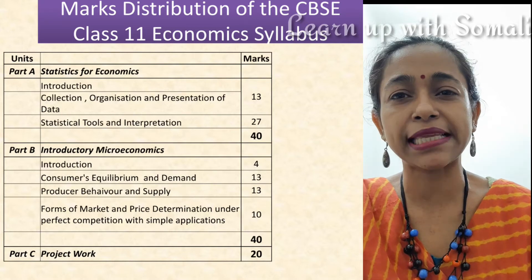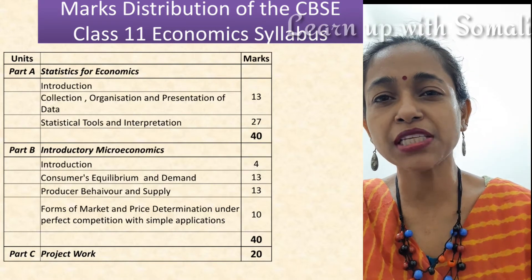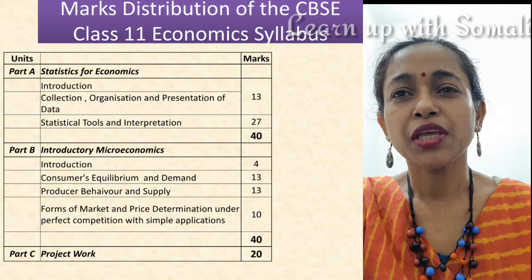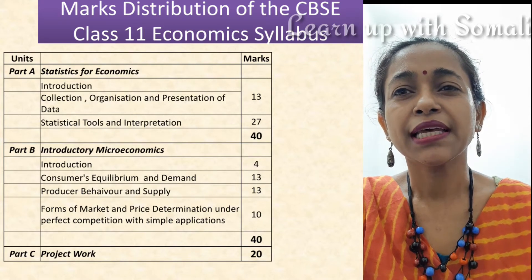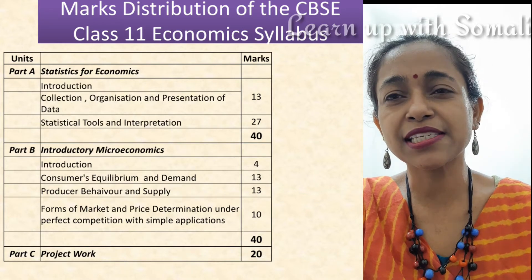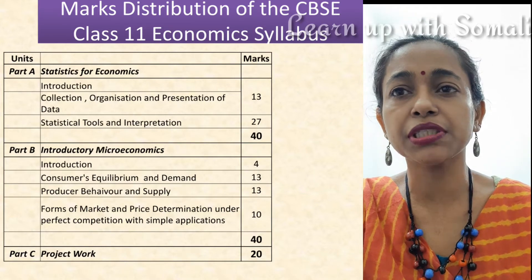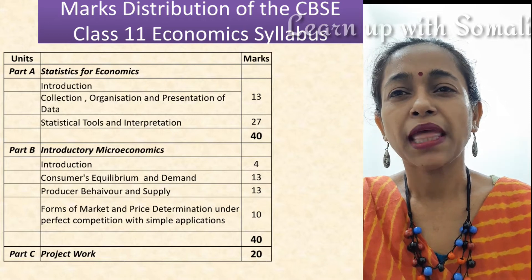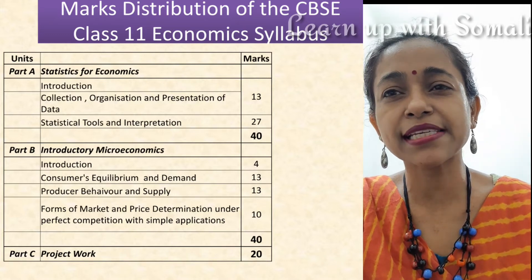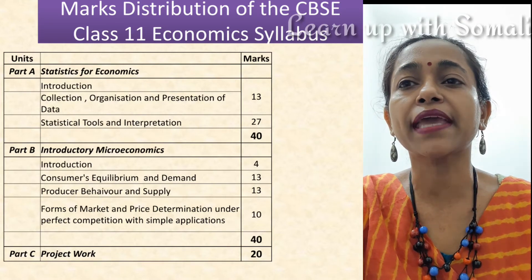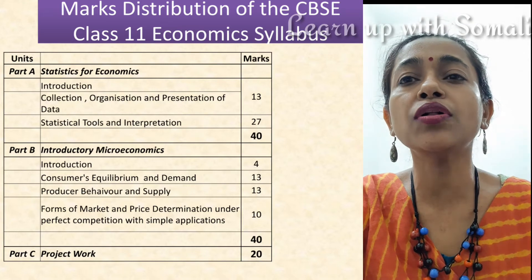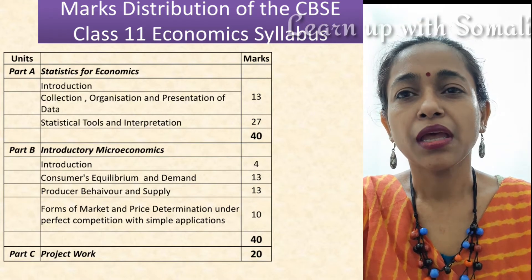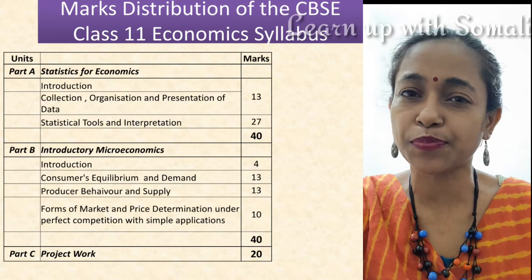I would like to show you the marks distribution of the CBSE Class 11 economics syllabus. You can see there is Part A, that is Statistics for Economics. You have the Introduction chapter, then the next chapter is Collection, Organization, and Presentation of Data carrying 13 marks, and the next chapter is Statistical Tools and Interpretation carrying 27 marks. These three parts constitute a total of 40 marks — this is the entire statistics portion for the year.